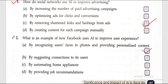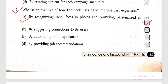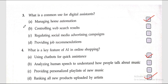Second question: what is an example of how Facebook uses AI to improve user experience? Answer: by recognizing user faces in photos and providing personalized content. Question three: what is a common use for digital assistants? The accurate answer is managing home automation.